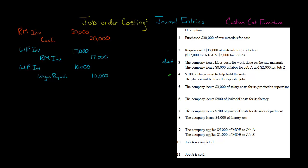Next, we use $100 of glue to help build the unit. Because it can't be traced to specific jobs, we're going to include that as manufacturing overhead. Whenever we have actual manufacturing overhead costs, we debit the manufacturing overhead account — I'll just abbreviate it MOH. We'll credit a manufacturing supplies account for $100. Sometimes the glue is included in raw materials as an indirect material, but to keep things simple, we'll do it this way.